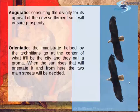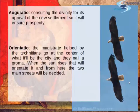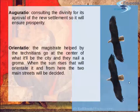Next came the orientatio. The magistrate, helped by technicians with the groma and other instruments, went to the center of what would be the city, nailed the groma, and at sunrise oriented the layout. From there, the two main streets were established: the Cardo Maximus north to south, and the Decumanus Maximus east to west. The magistrate also took on a priestly role, marking the limits of the temple area where the protective gods would be housed.